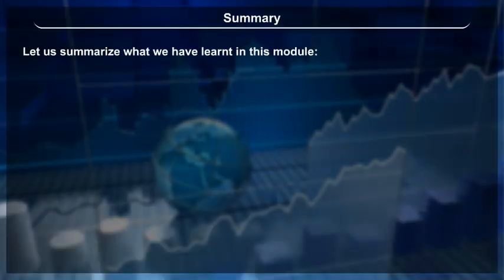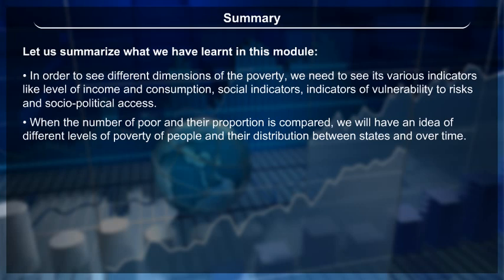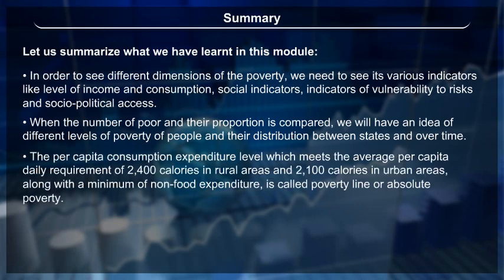Summary: To see different dimensions of poverty, we need to examine its various indicators like level of income and consumption, social indicators, indicators of vulnerability to risks, and socio-political access. When the number of poor and their proportion is compared, we will have an idea of different levels of poverty and their distribution between states and over time. The per capita consumption expenditure level meeting the average per capita daily requirement of 2400 calories in rural areas and 2100 calories in urban areas, along with a minimum of non-food expenditure, is called the poverty line or absolute poverty.